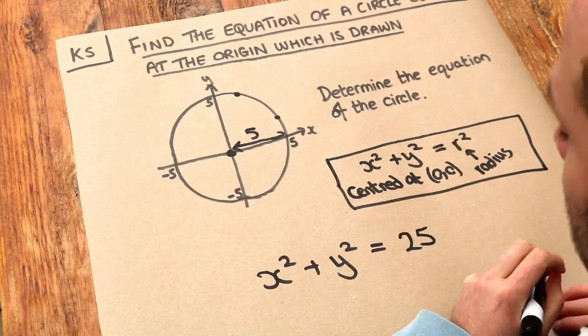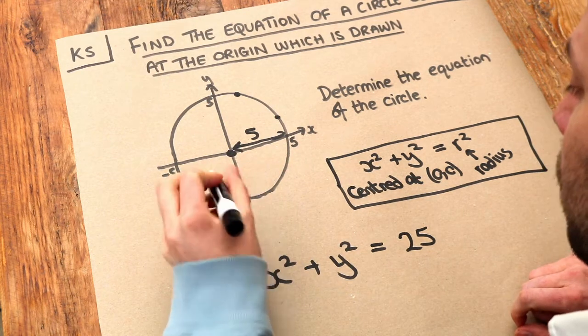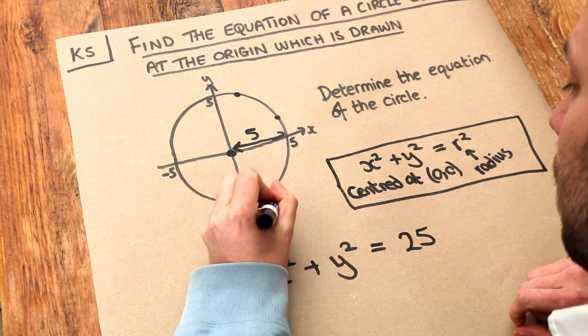And we can check that this works for other points on the circle. Let's just take this point for example. That's the point (0, -5).